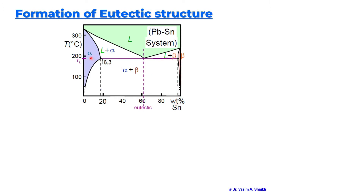Similarly, the alpha phase boundary is around 18.3 weight percent tin, so you can say that more than 80 percent of the composition in the alpha phase is lead. As a ballpark figure, alpha is rich in lead and beta is rich in tin.